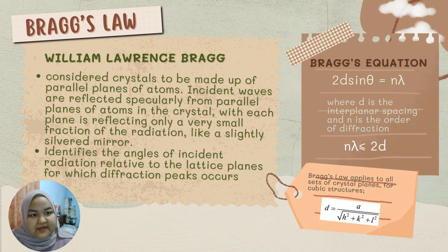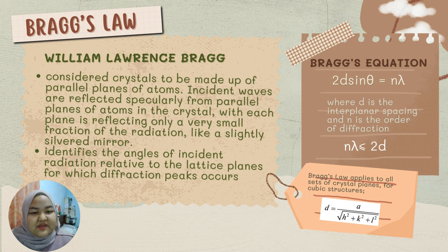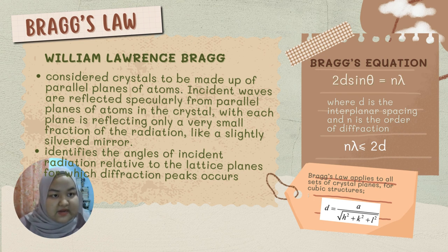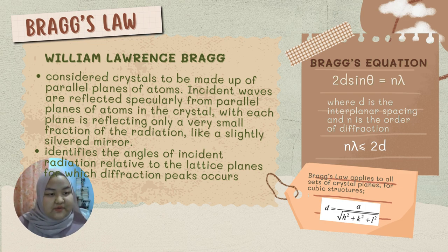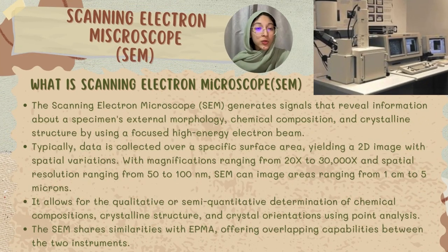Bragg's Law was proposed by William Lawrence Bragg, a famous physicist who considered crystals to be made up of parallel planes of atoms. Incident waves are reflected specularly from parallel planes of atoms in the crystal, with each plane reflecting only a very small fraction of the radiation. Bragg's equation states that 2d sinθ = nλ, where d is the interplanar spacing and n is the order of diffraction, and nλ must be less than or equal to 2d. For cubic structures, d equals a divided by the square root of h² + k² + l².